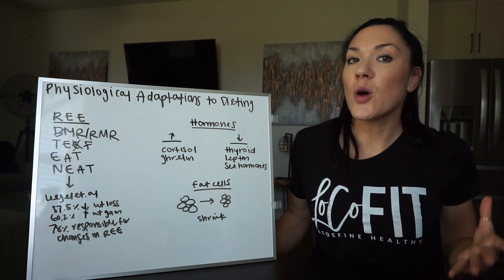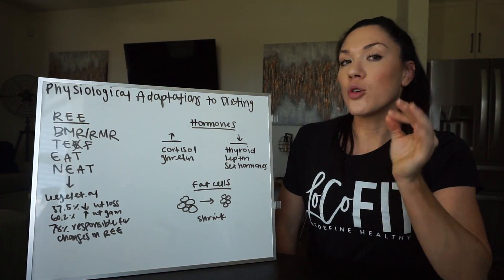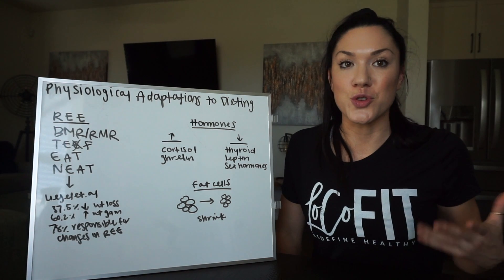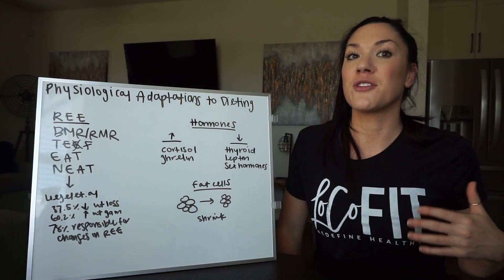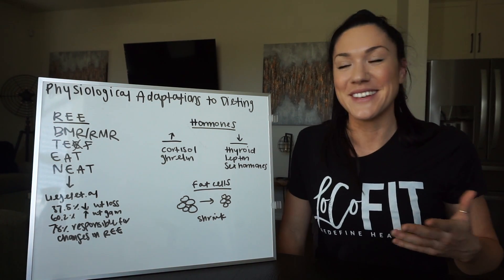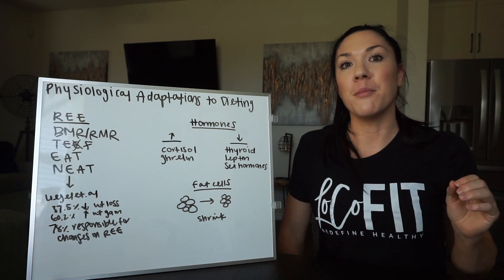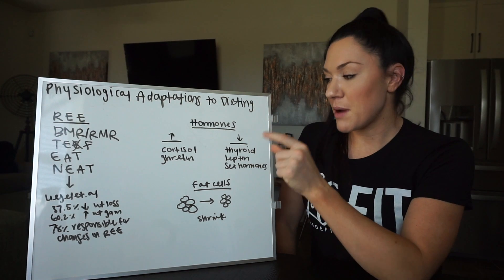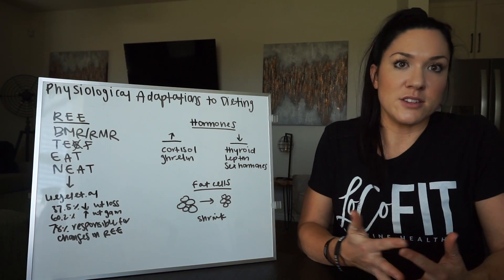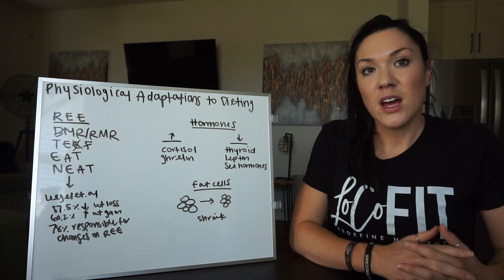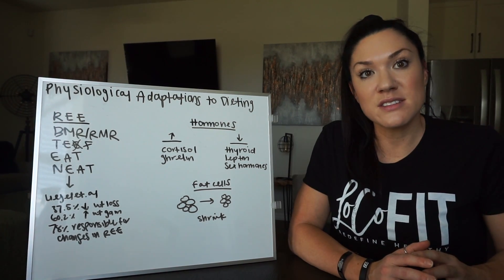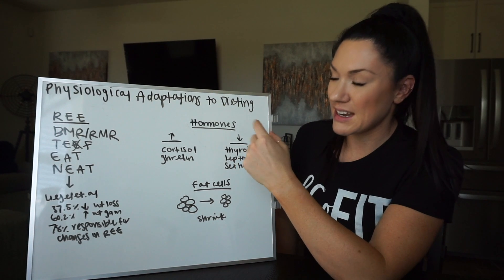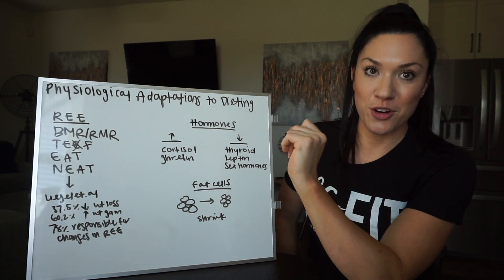The other part of this equation is the hormonal adaptations you're going to see when you're dieting. Some are going to go up, some are going to go down. Cortisol is going to be one of the ones that goes up — it's a hormone secreted during the stress response, and dieting is a stressor to your body. Ghrelin is also going to go up — that is known as the hunger hormone. Most people are hungry when they diet, and this is usually the reason people fall off their diet. Thyroid is going to go down, and leptin is going to go down as well. Leptin is stored in fat cells and is the satiety hormone, so if you have less fat in your fat cells, you're going to have less leptin. The lower leptin and higher ghrelin is really the sucker punch of hunger that you feel when you're dieting.